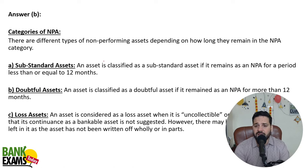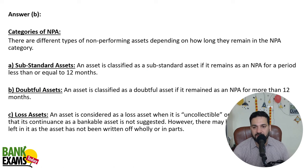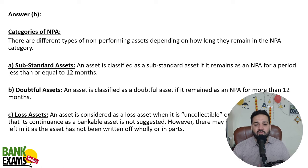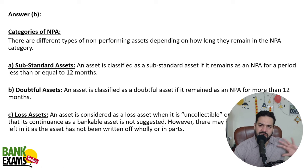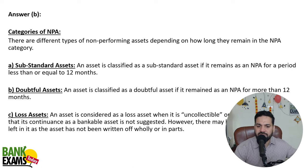The moment an asset is classified as substandard, it remains as an NPA for a period of less than 12 months — after 90 days. It is a doubtful asset, or a loss asset when the bank realizes that nothing is going to happen and it becomes a loss asset. So: substandard, doubtful, and loss assets.